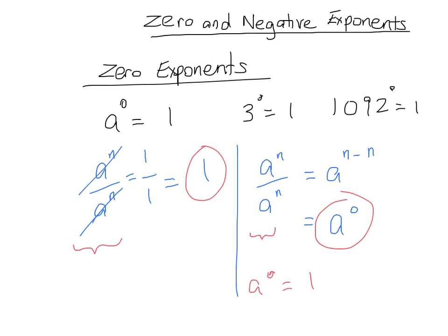Any number — this works with any number to the power of zero, so it's really important to remember that anything to the power of zero is always one. There is a slight exception: zero to the power of zero brings about many arguments. I will just say for now that zero to the power of zero is undefined, but anything else to the power of zero will give you one.